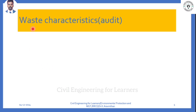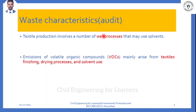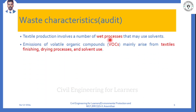Next is waste characteristics, or waste audit. In the syllabus, the term 'audit' means identifying the key pollution points during manufacturing of textiles. As highlighted earlier, wet processing is the place where the highest amount of pollution occurs. VOC - Volatile Organic Compounds - are generated during this process.